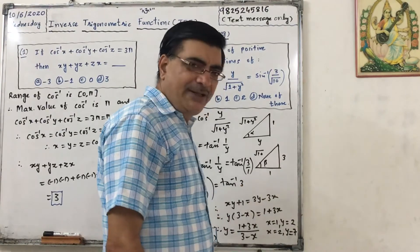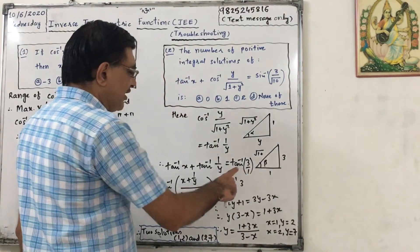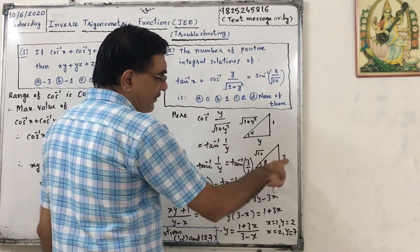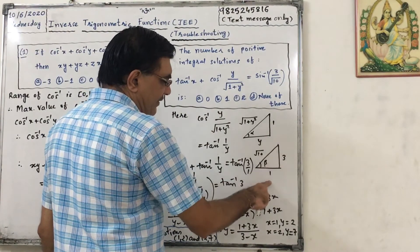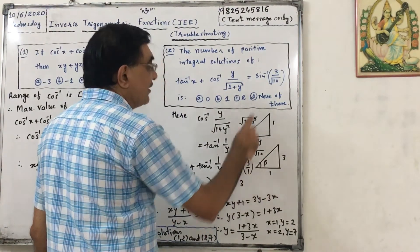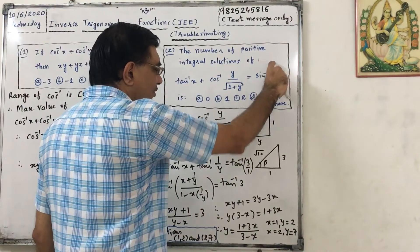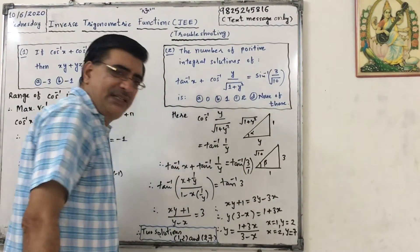So here the tan inverse will be equal to opposite side upon adjacent side, so tan inverse of 3 upon 1. For sine inverse of 3 by root 10, we can write tan inverse of 3 by 1.